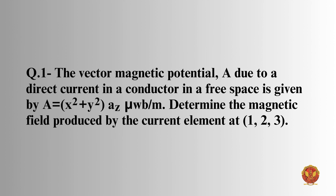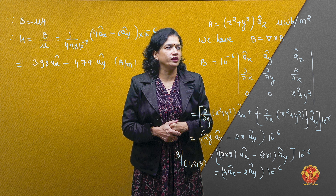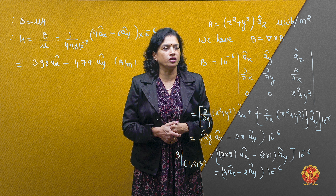The vector magnetic potential A due to a direct current in a conductor in free space is given by A = (x² + y²) az microwebers per meter squared. Determine the magnetic field produced by the current element at point (1, 2, 3). The expression given is x square plus y square az microwebers per meter squared.